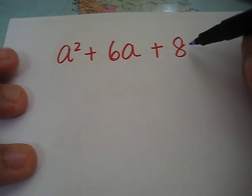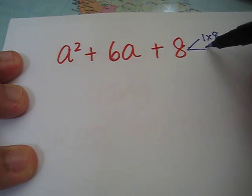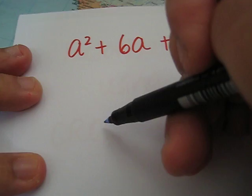Before that, let's look at this term, this constant. 8 can be expressed as 1 times 8, or 2 times 4. So we are going to use the cross method.